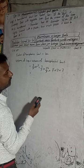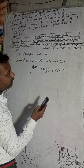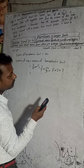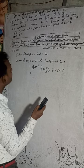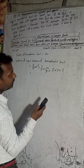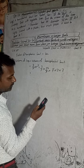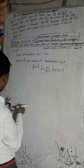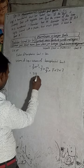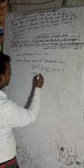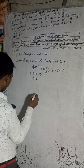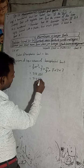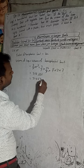The result comes out to 718.666..., which we round to 718.67. So the answer is 718.67 cm³.